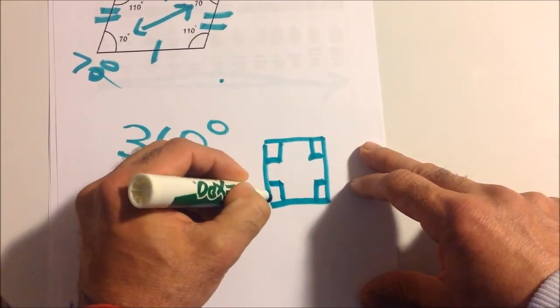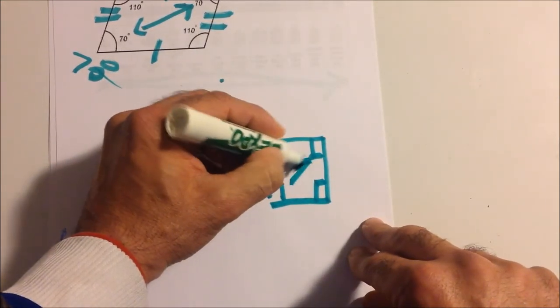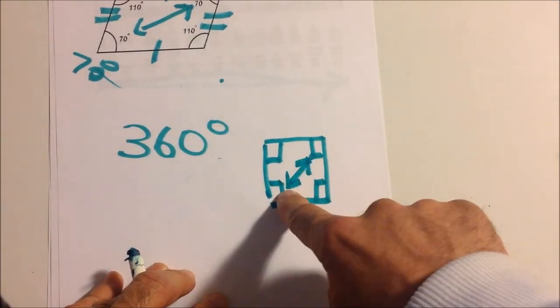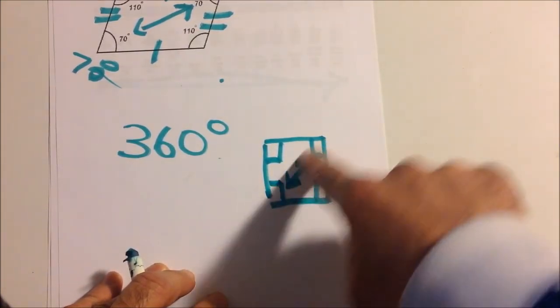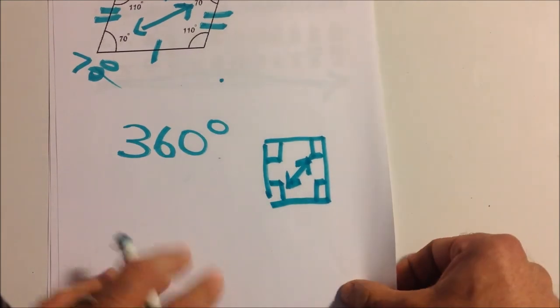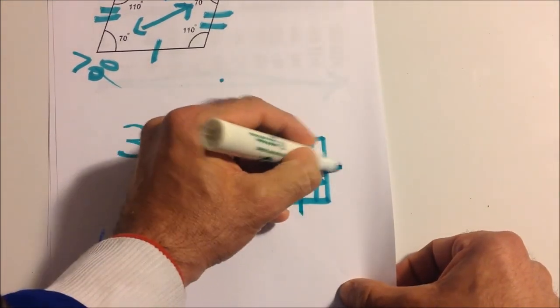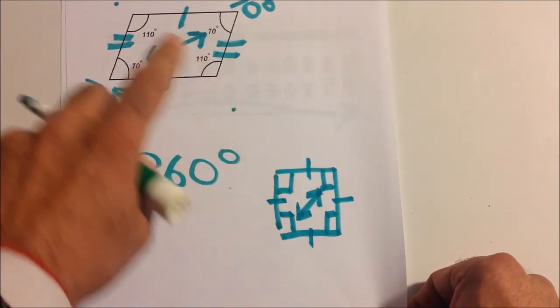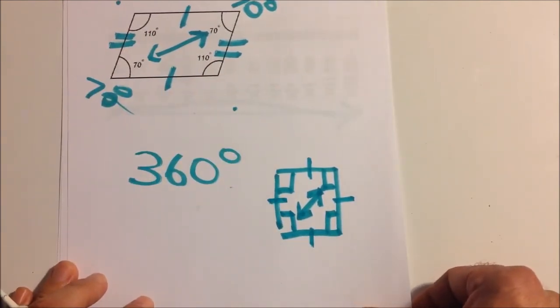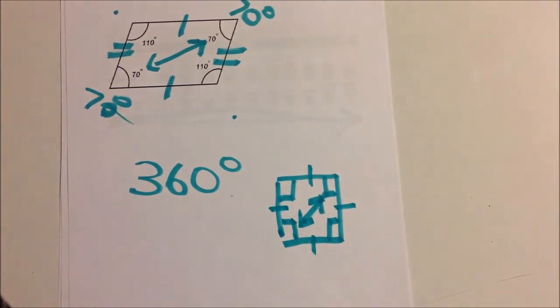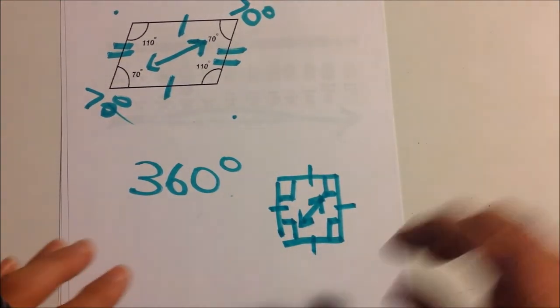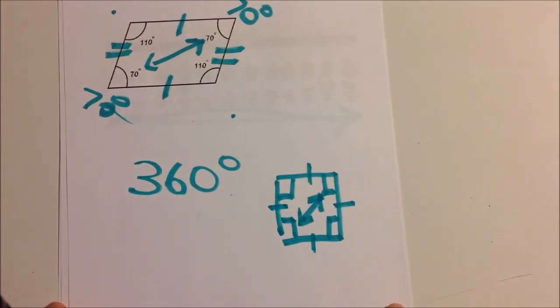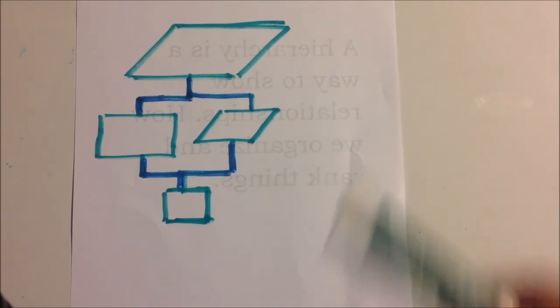A square has 90-degree angles, but it satisfies the requirements of a parallelogram: opposite angles are congruent and it has two pairs of parallel sides. So a square is a parallelogram. A rhombus is a parallelogram, a rectangle is a parallelogram — that's why parallelograms include all those types we just named.